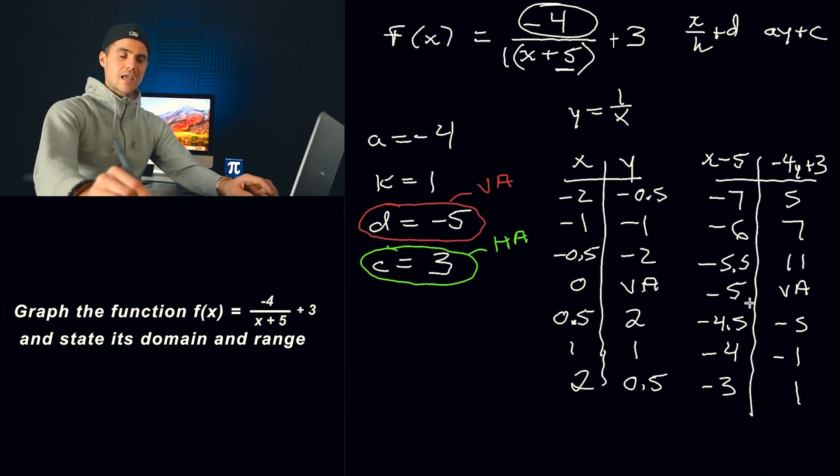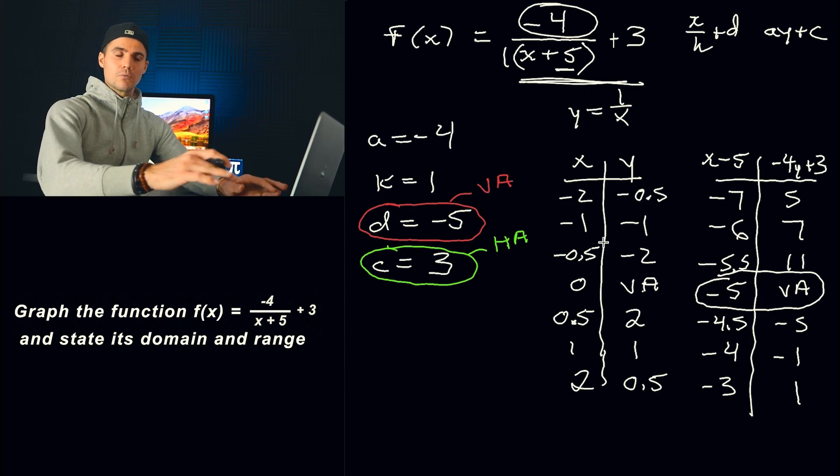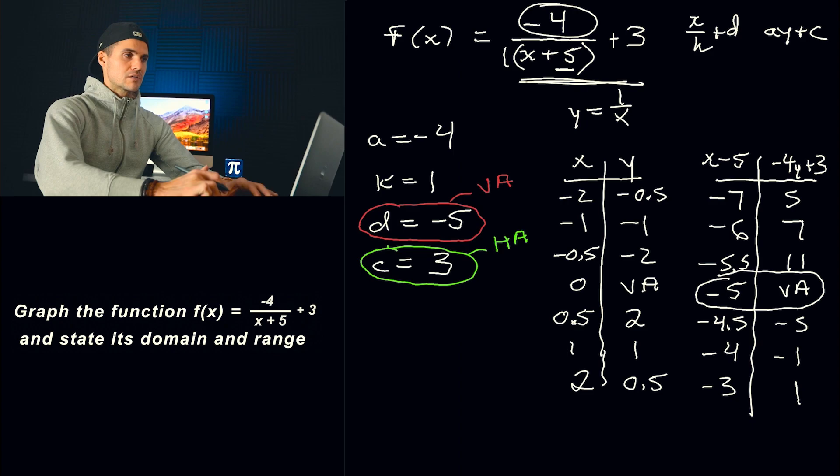And so that's the table of values that we're going to plot. That's the table of values for this function that we were given. Now notice that we got a vertical asymptote at negative 5, which is actually in line with what we wrote here, right? We already knew the vertical asymptote was going to be at negative 5 because we mentioned the d value is always going to be the vertical asymptote. But it's nice to see how in the table it corresponds correctly. So it's like a little mini check that you have on the way to graphing this function.